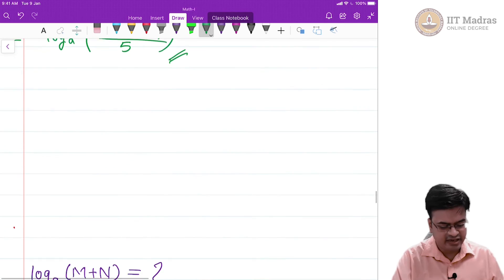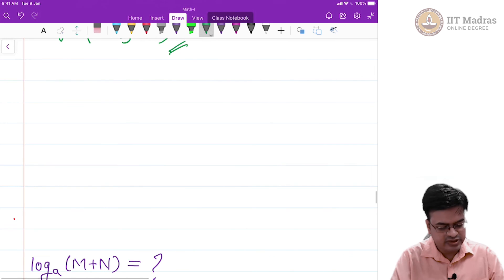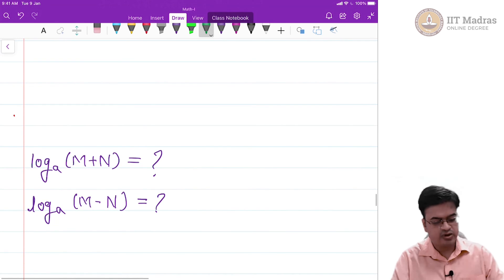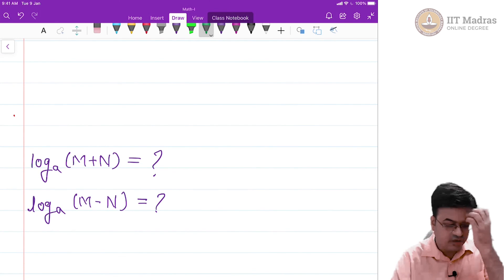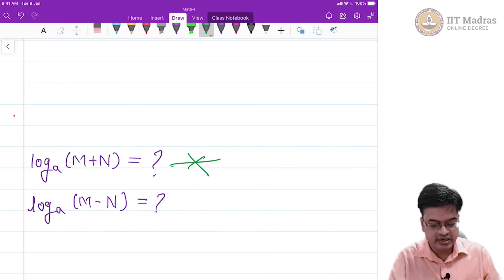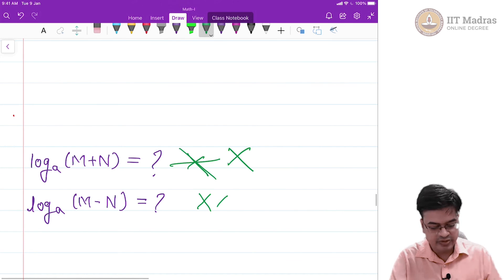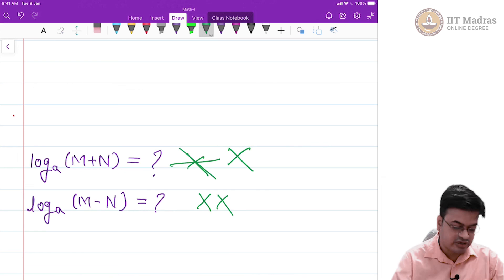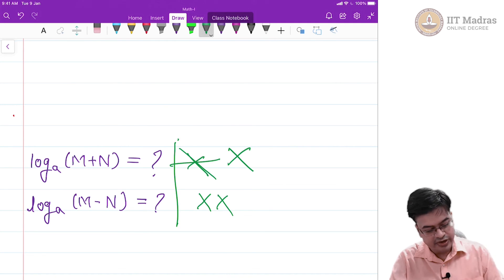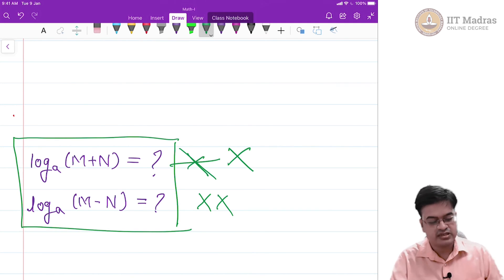I have already warned you about this log to the base a of m plus n, you cannot get anything out of this. In a similar manner log to the base a of m plus n you cannot use reverse exponential or any other form to get something out of this while solving the problems of logarithms. Just whenever these such terms come be aware and do not apply the things blindly.